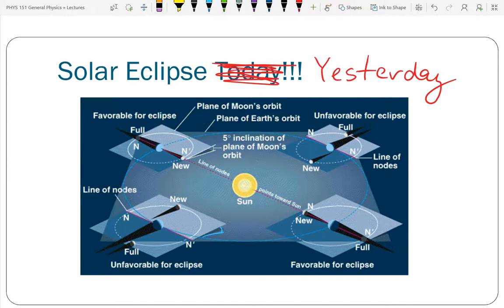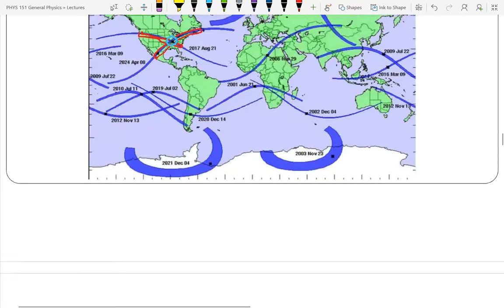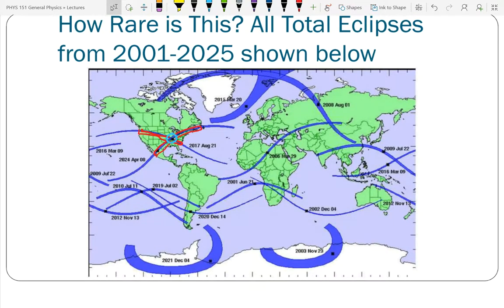Solar eclipses, in theory, should happen somewhere on earth approximately twice a year. But in practice, sometimes the moon is a little closer than normal, and we have a nice good eclipse like we had yesterday. Sometimes it's a little farther than normal, and we have what we call an annular eclipse. In 2012, we had an annular eclipse where the moon passed in front of the sun, but you could still see a ring of the sun around the moon.